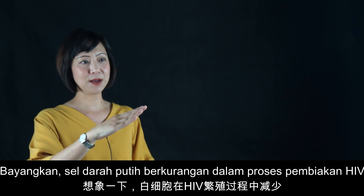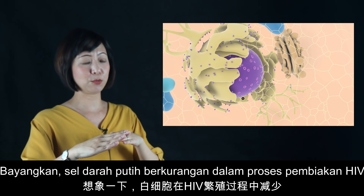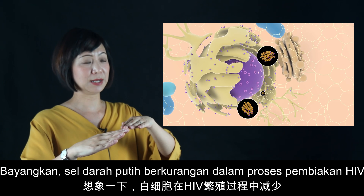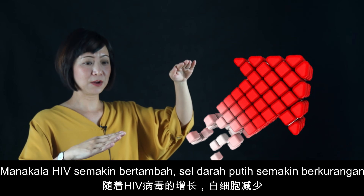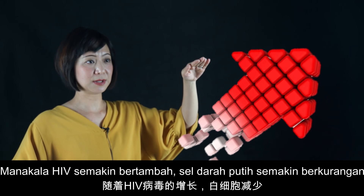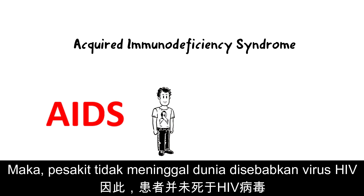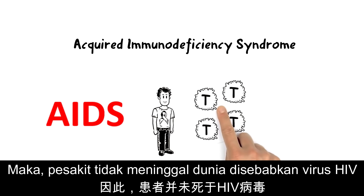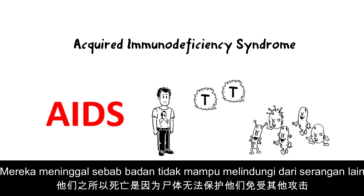Imagine we have fewer and fewer white blood cells. HIV uses white blood cells to replicate and produce new babies, so HIV increases while our white blood cells decrease — a very imbalanced system. That is why most people with HIV don't die because of HIV itself; they die because of other diseases that attack the body and the body cannot fight.